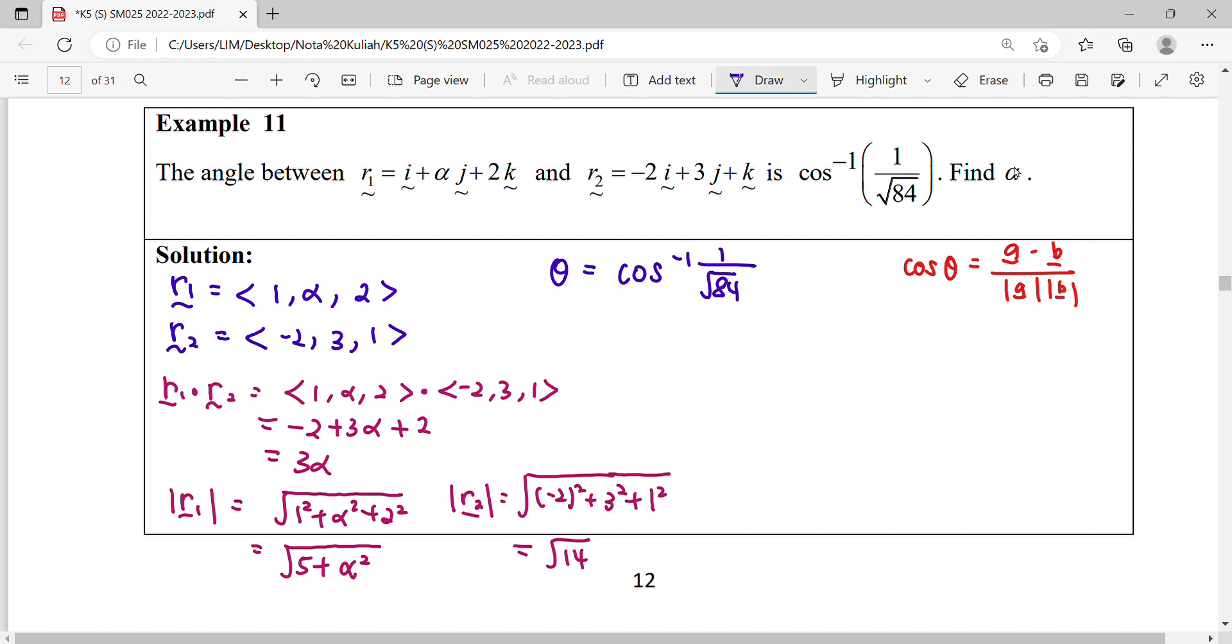So when we substitute back this information into the equation, means your cos theta is equal to 1 over 0.84 or we can directly move it. So from here we can compare, so this value is equal to this part.